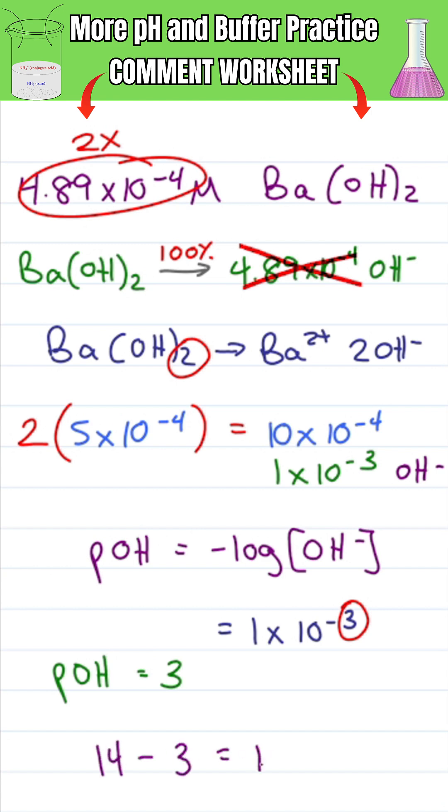14 minus pOH is equal to pH, which gives me a pH of 11.